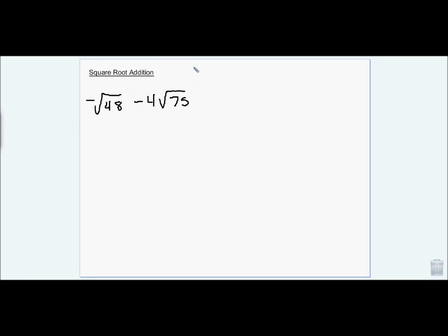Square root addition. In order to add square roots, we have to have roots that match. So for example, if I have 2 times the square root of 5 plus 3 times the square root of 5, I can add together and get 5 times the square root of 5, because 2 plus 3 is 5. We treat our radical the same as we would treat any variable.